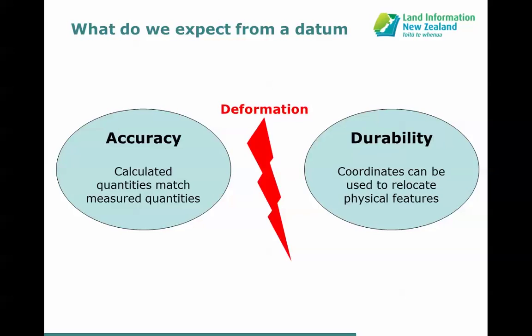We can't have both accuracy and durability, because of deformation — the movement of the earth due to tectonic plate deformation, earthquakes, and so on. Everything in New Zealand is moving, and some points are moving differently to others. If coordinates are correct for two objects in 2000, by 2015 those objects may have moved differently, so their relationship will have changed. Either you update coordinates for accuracy but lose durability, or keep coordinates the same but they're no longer accurate.